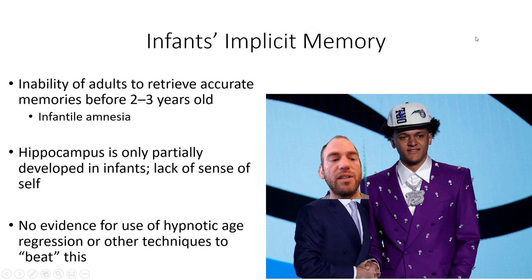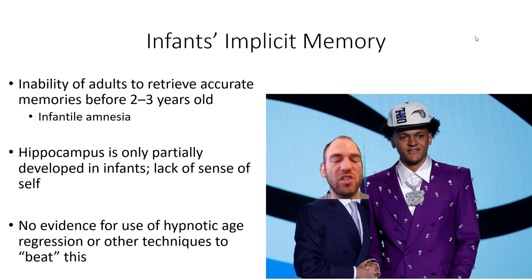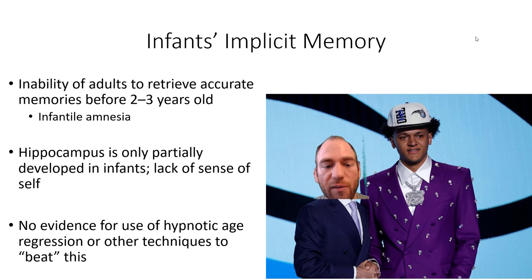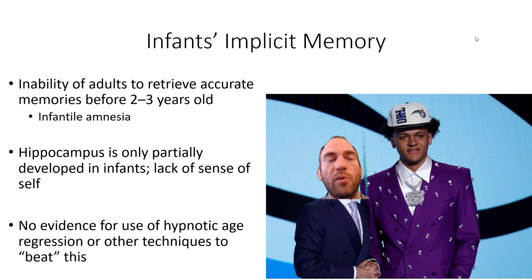Infant amnesia is defined as the inability of adults to retrieve accurate information from ages 2–3 years old or younger. The hippocampus is only partially developed in infants, and their lack of a sense of self are two reasons we cannot remember information from approximately age two to three. We literally don't have the neurological capabilities, nor the cognitive recognition of ourselves as distinct beings. There is no evidence for hypnotic age regression or other techniques to overcome infantile amnesia.